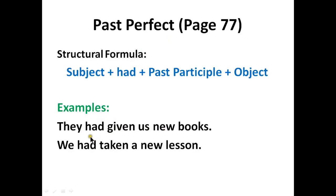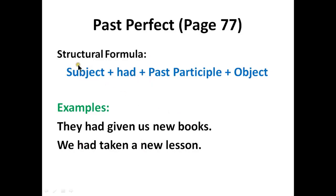This is a sentence of past perfect tense. The word 'they' is a subject, 'had' is a helping verb, 'given' is the past participle verb, and 'new books' is the object. Another example: 'We had taken a new lesson.' This sentence also belongs to past perfect tense because it meets all the requirements mentioned in the structural formula.